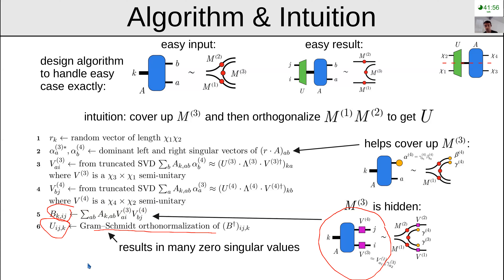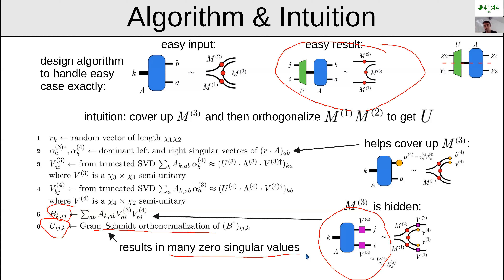This is a good choice because it gives the correct result, and due to the orthogonality from Gram-Schmidt, I also have many zero singular values. This will result in better truncation errors.